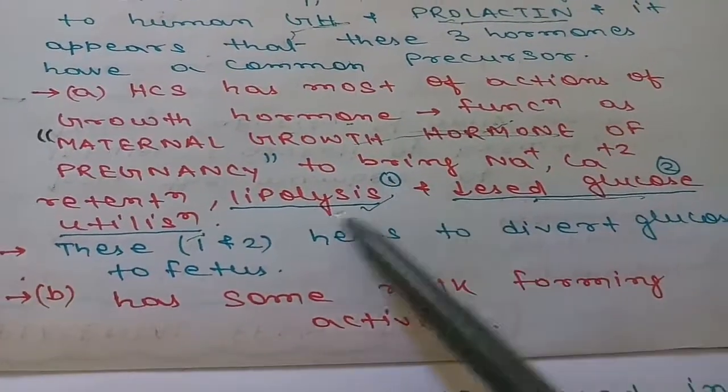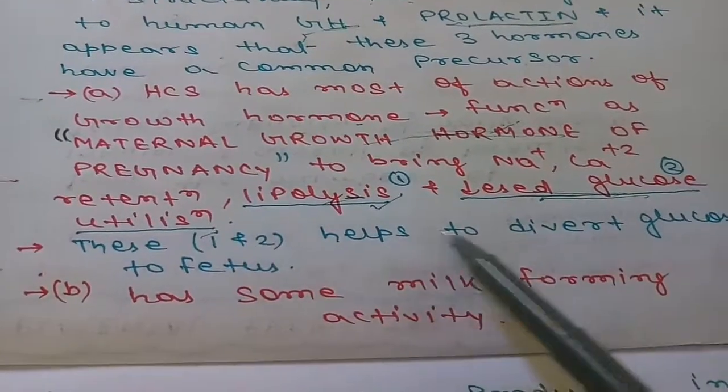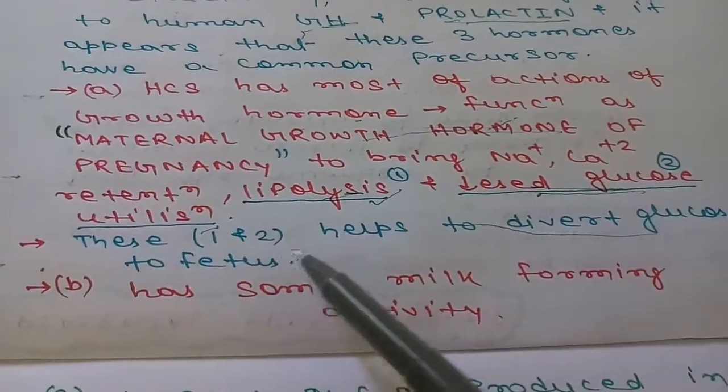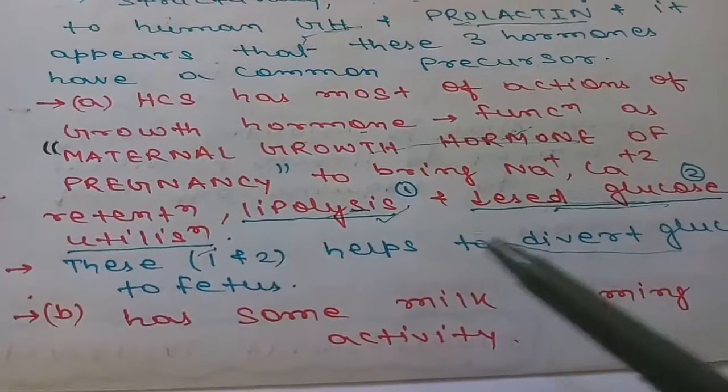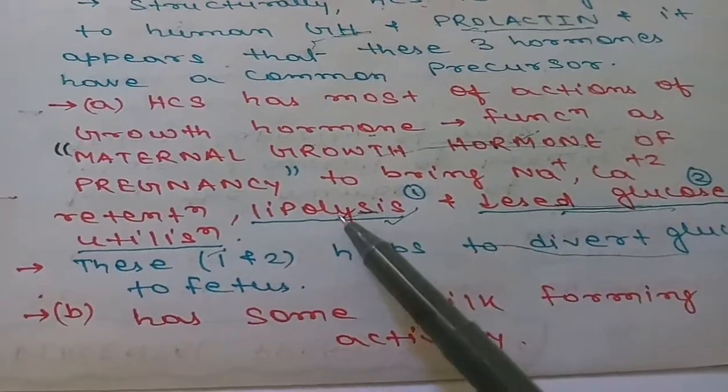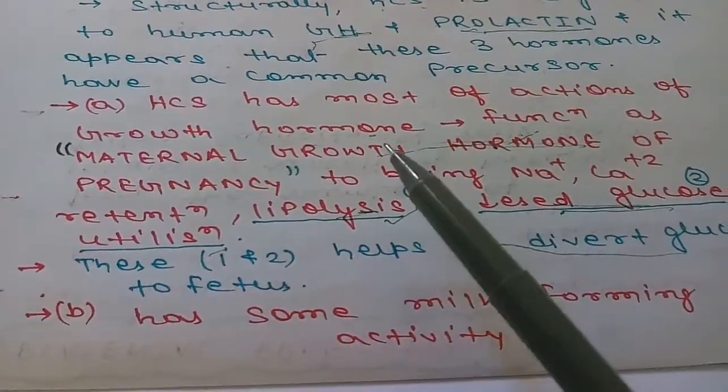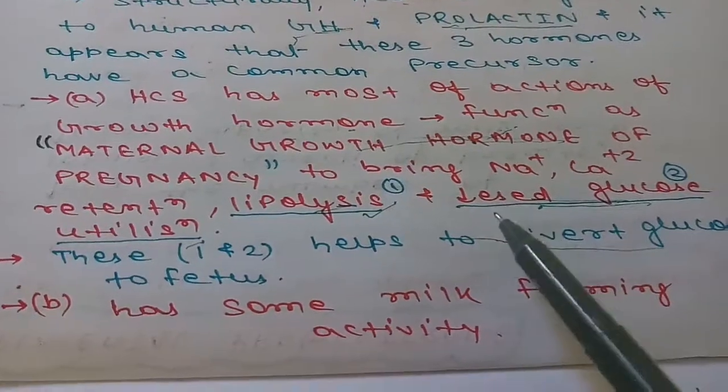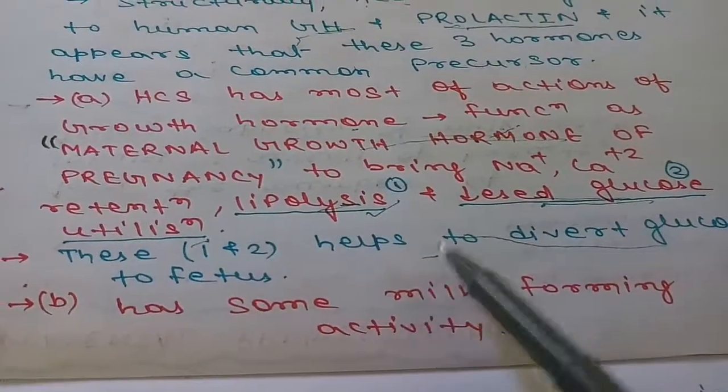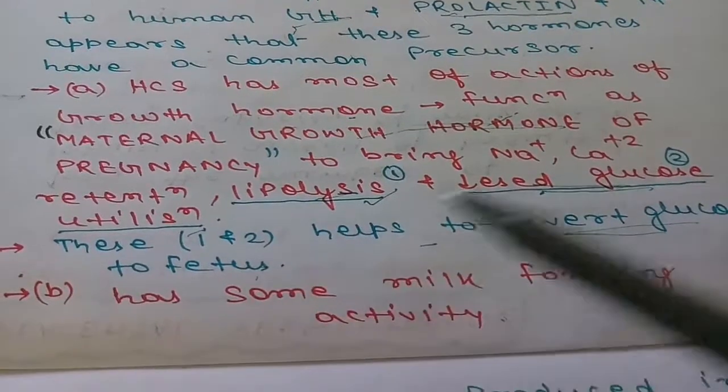This lipolysis and decreased glucose utilization help to divert glucose to the fetus, because the fetus requires more glucose. Increased lipolysis within maternal blood and decreased glucose utilization by cells help to divert glucose to the fetus.